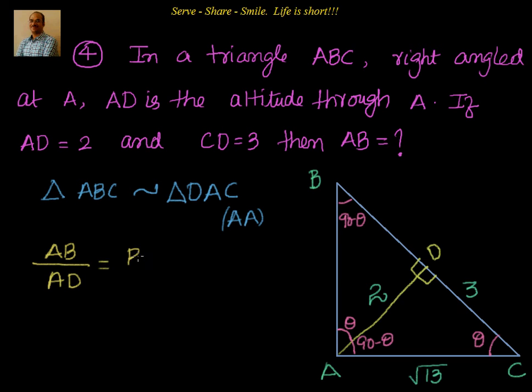That means AB divided by AD is equal to BC divided by AC, which equals AC divided by CD. Now we need AB information, so certainly we have to go with AB by AD, and the other side I have to look where I have information: I have AC and I also have CD.